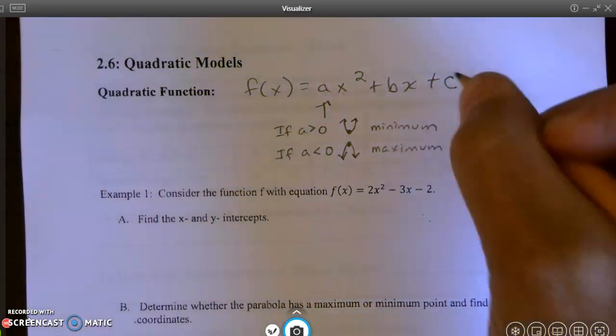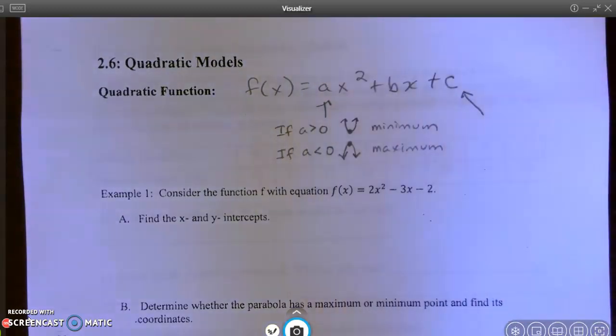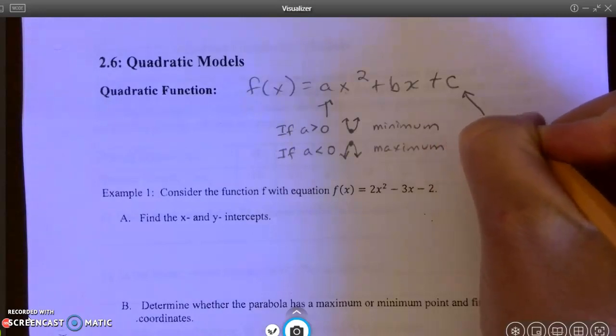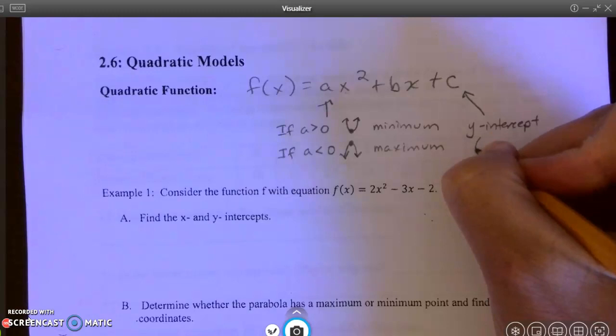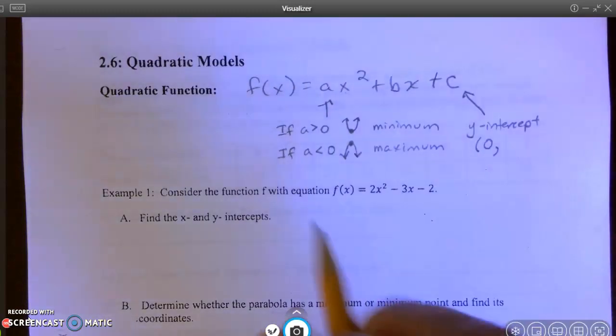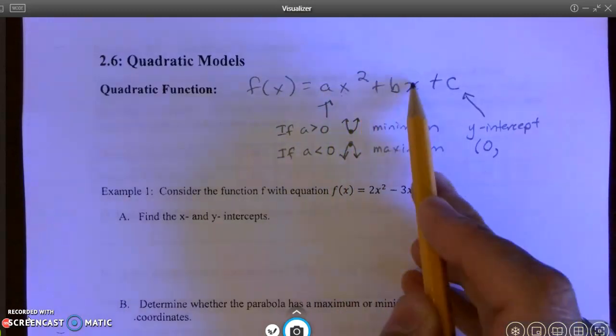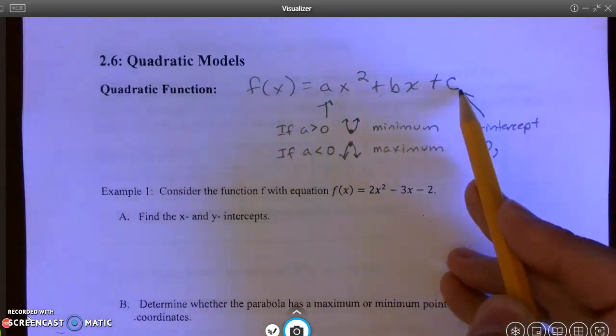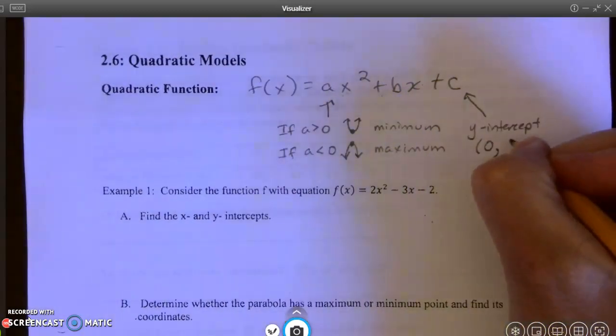The c value is another important value in the quadratic function. It is the y-intercept. If you put zero in for x, if I put a zero here, that wipes this term out, and I put a zero here, that wipes this term out, I'm only left with c. And so the y-intercept is (0, c).